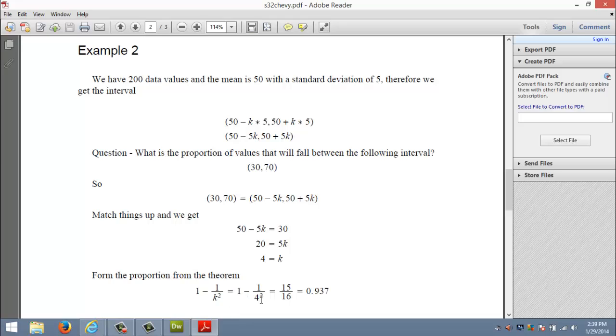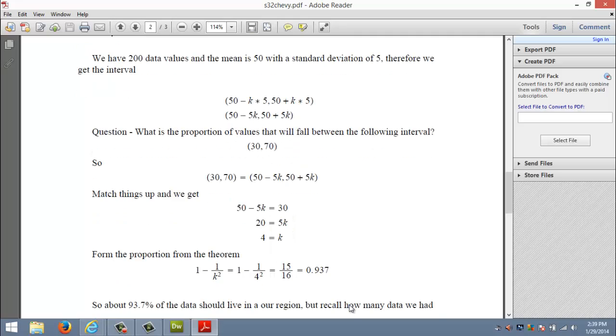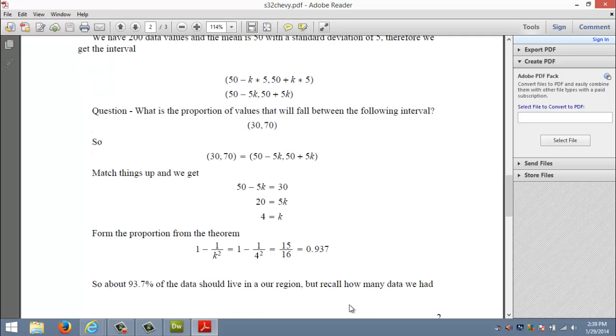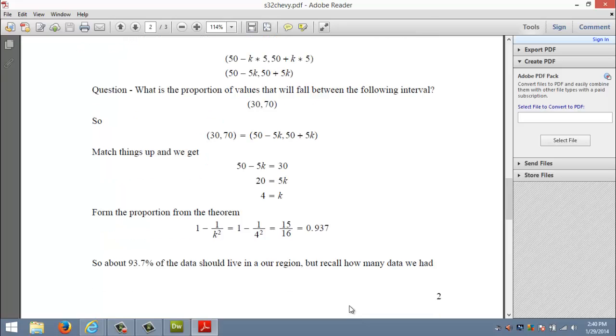If k is 4, I plug that into my formula which predicts the proportion of the data that would live there. So it's 1 minus 1 over 4 squared, 1 minus 1/16 which would give me 15/16.